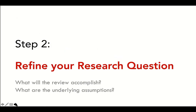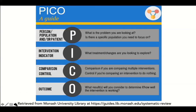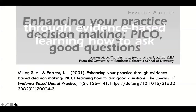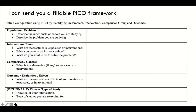So now we will be looking at step two, which is working on your research question. This is where you ask yourself: what will your review accomplish, and what are your underlying assumptions? So everybody's probably heard of PICO. PICO is a question framework that comes from dentistry, actually — this is the original article from which PICO comes — and it's part of evidence-based decision-making, so asking good questions. I'm going to go straight into offering you an example with PICO.